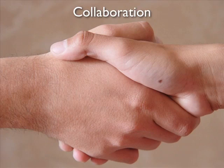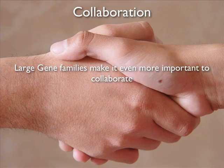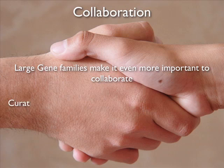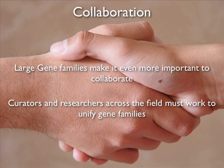The need for collaboration between curators for multiple species and the research community is particularly important when dealing with large gene families. Working from the nomenclature guidelines for rat, mouse, and human, and from information on the relationships among the genes in a single species and the orthology between species, curators and researchers work together to establish meaningful and informative nomenclature for all of the known and predicted genes in a family.